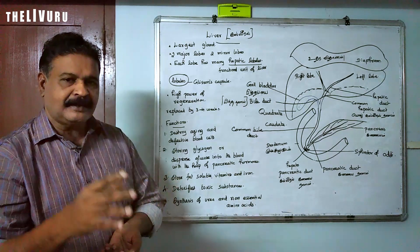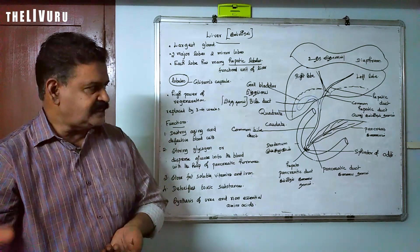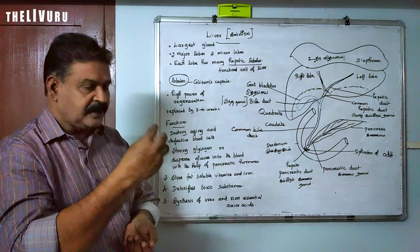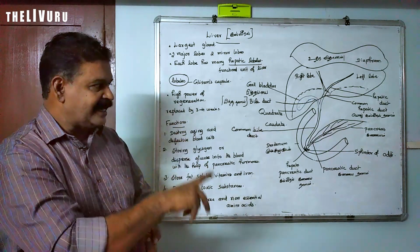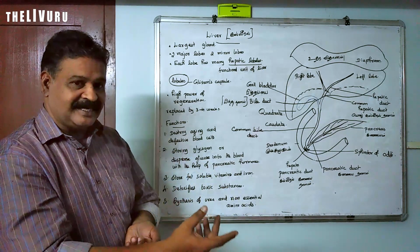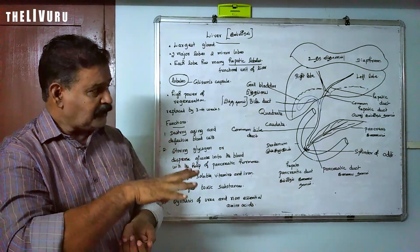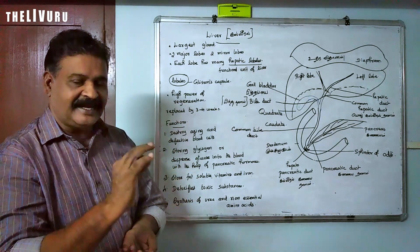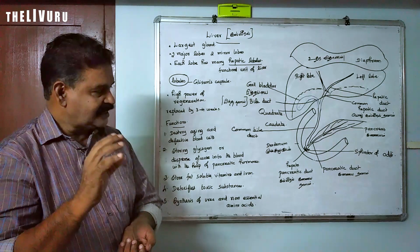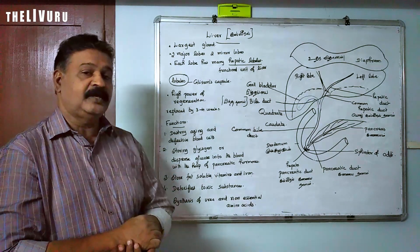Insulin and glucagon are meant for maintaining the blood glucose level in our body. There is no separate duct for the secretion of these hormones, so the pancreas secretes the hormones directly into the blood. That is the endocrine function. Thus the pancreas acts as both exocrine and endocrine — it is the dual gland or dual organ.